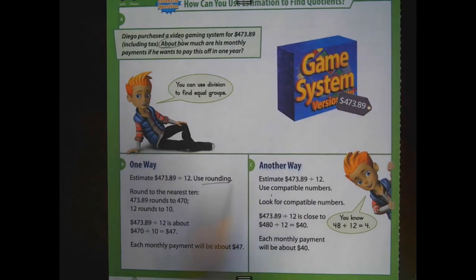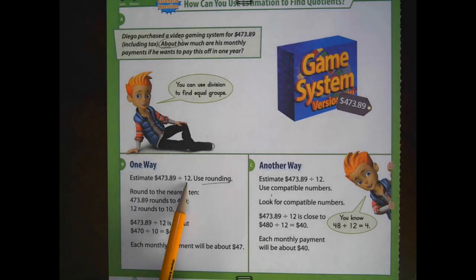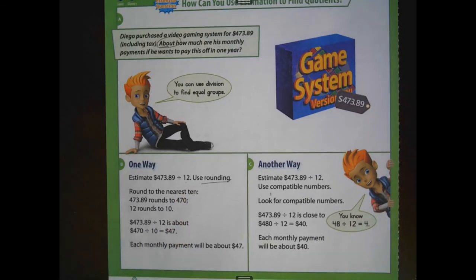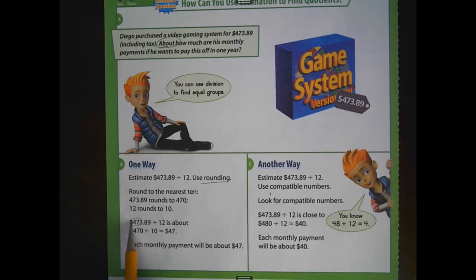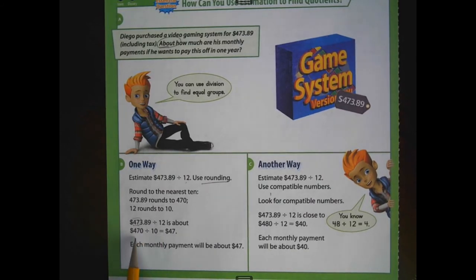We can estimate $473.89 divided by 12 by rounding to the nearest 10, 12 rounds to the nearest 10. I'll tell you what, boys and girls, if you have mastered your multiplication facts, you can actually leave it 12 and have a closer estimate. I like to leave anything here 1 to 12 as is because I know my multiplication facts. And if we do that, then we are going to look at a number close to 47 that is divisible by 12.